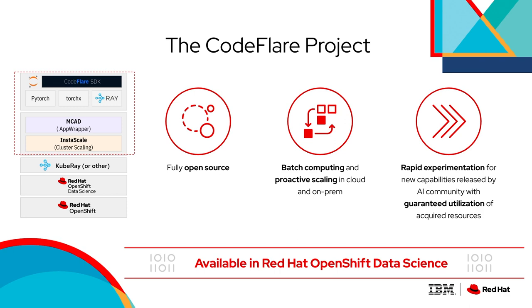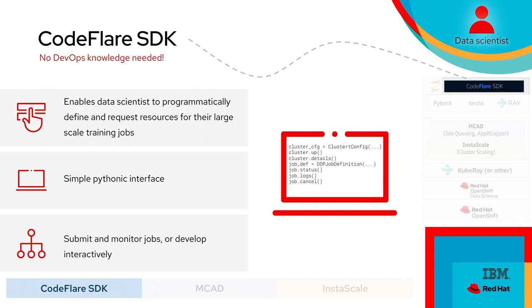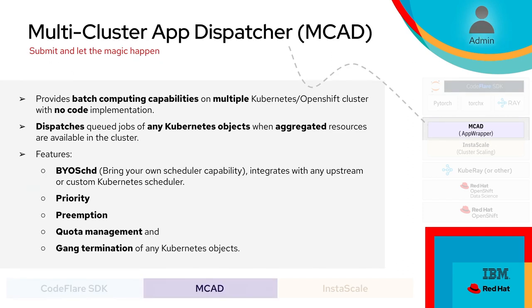The CodeFlare project is fully open source. It provides batch computing and elastic scaling in cloud and on-prem environments. It also allows data scientists to do rapid experimentation for new capabilities released in the AI community, with guaranteed utilization of resources. It's available in Red Hat OpenShift Data Science now. The CodeFlare SDK is a simple Pythonic interface — no DevOps knowledge needed. It enables data scientists to programmatically define and request resources for large AI-ML workloads, submit and monitor jobs, and develop interactively.